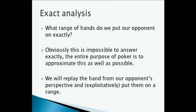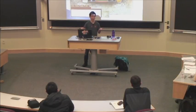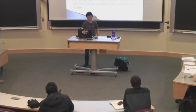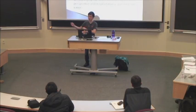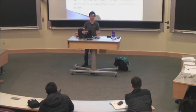A lot happened this hand: the opponent raised preflop, bet flop, bet turn, then checked the river. We have a ton of information. In a tournament, a hand like this might not show up often because it's just all in preflop, but here we can do a lot of deduction. Let's replay the hand from our opponent's perspective and exploitatively put them on a range. I'm going to use exploitative analysis — we're somewhat arrogantly assuming we're one step ahead of our opponent, but it's a useful exercise even with its flaws.